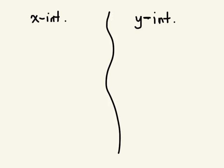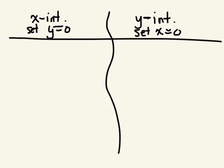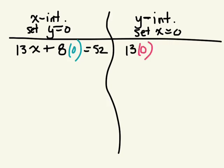So X-intercept, set what equal to zero? Good. And Y-intercept, set X equal to zero. We're going to use the equation 13X plus 8 times zero equals 52. And then here, 13 times zero, this time we're making X zero, plus 8Y equals 52.